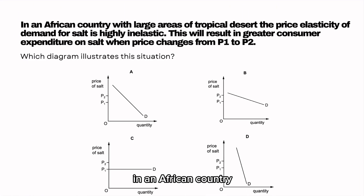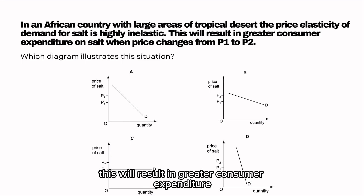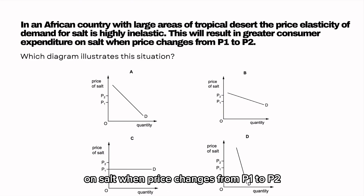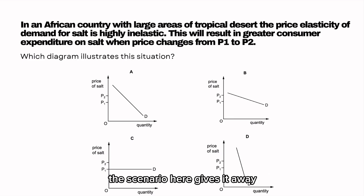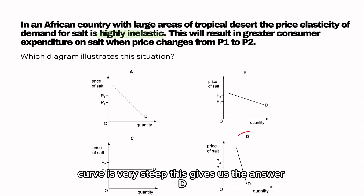In an African country with large areas of tropical desert, the price elasticity of demand for salt is highly inelastic. This will result in greater consumer expenditure on salt when price changes from P1 to P2. Which diagram illustrates this situation? The scenario gives it away — salt is highly inelastic, and we know that a highly inelastic demand curve is very steep. This gives us the answer D.